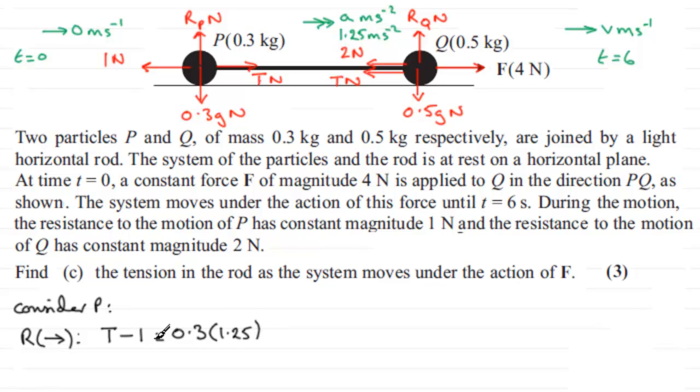So if you do 0.3 times 1.25, and you add one to both sides, you'll get your tension. T will equal 1 plus 0.3 times 1.25. And if you work that out, what you get is 1.375 newtons. So we'll put that in 1.375 newtons.